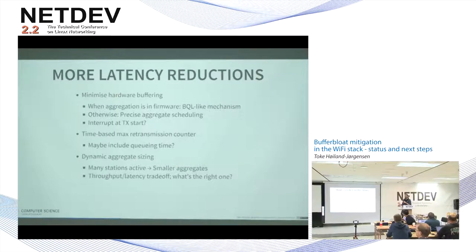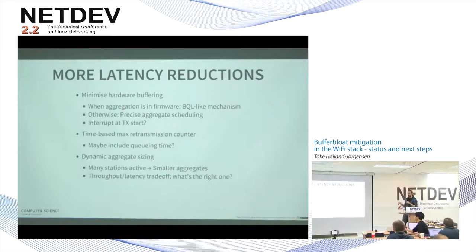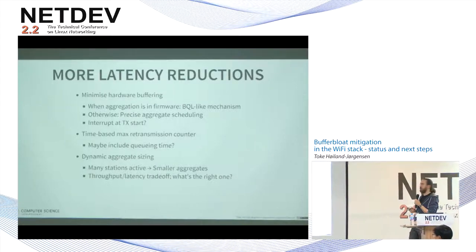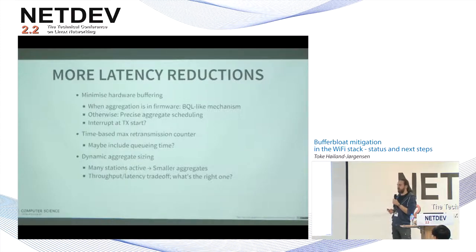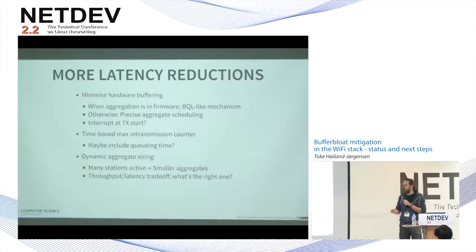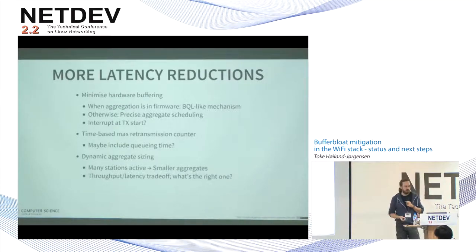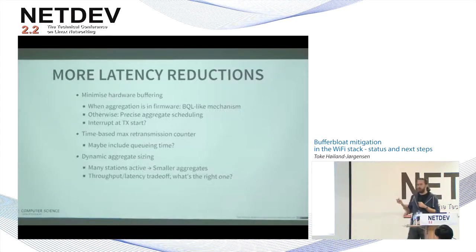The other latency issue is retransmission. Right now in ATH9K, every packet can be retried up to 30 times before being dropped — that's on the high end, especially at 6 megabits per second. The fix is to start counting how long we've actually been trying to send a packet, including queuing time, then drop it if we can't get it through and try the next one. That's straightforward to do, just not implemented yet.